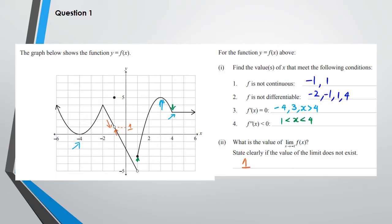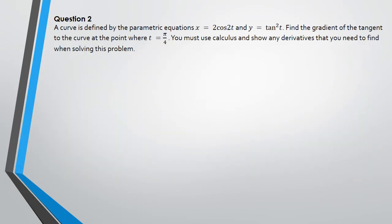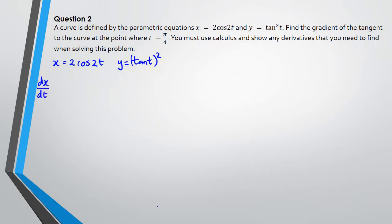Now we've got two parametric equations: x = 2cos(2t) and y = tan²(t). Notice I wrote it as tan(t) whole squared because that's going to help with differentiation later. We're looking for the gradient of the tangent where t = π/4. First I'll work out dx/dt: differentiating 2cos(2t) gives 2 × (-sin(2t)) × 2, which simplifies to -4sin(2t).